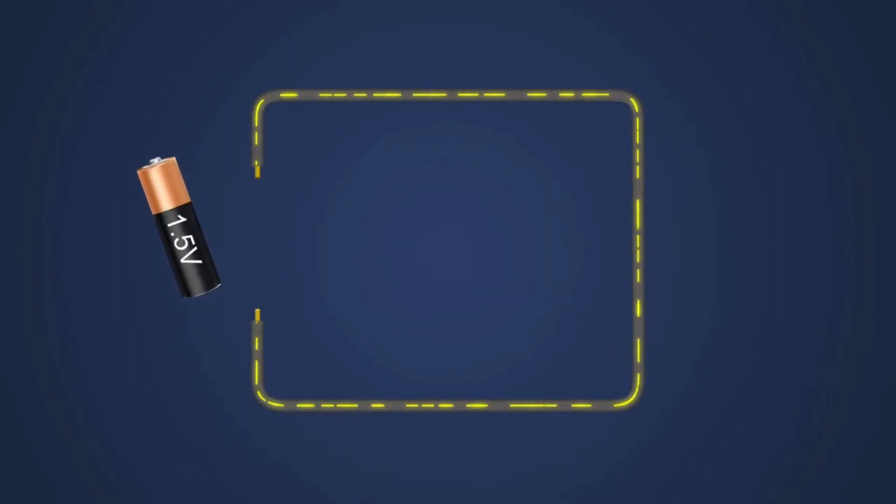Without voltage, the electrons will move randomly in all directions. Voltage is what pushes electrons around a circuit.